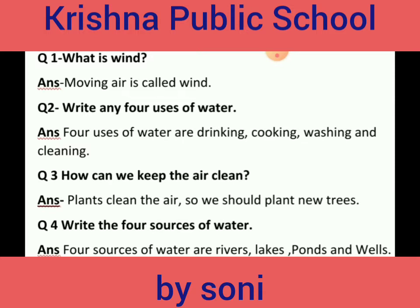Question 3: How can we keep the air clean? The four sources of water are rivers, lakes, ponds, and wells. Rivers means nadiyan, lakes means jheel, ponds means talab, wells means kuan. Pani ke 4 sources kya hote hain — nadiyan, jheel, talab aur kuan. Thank you children, have a nice day.